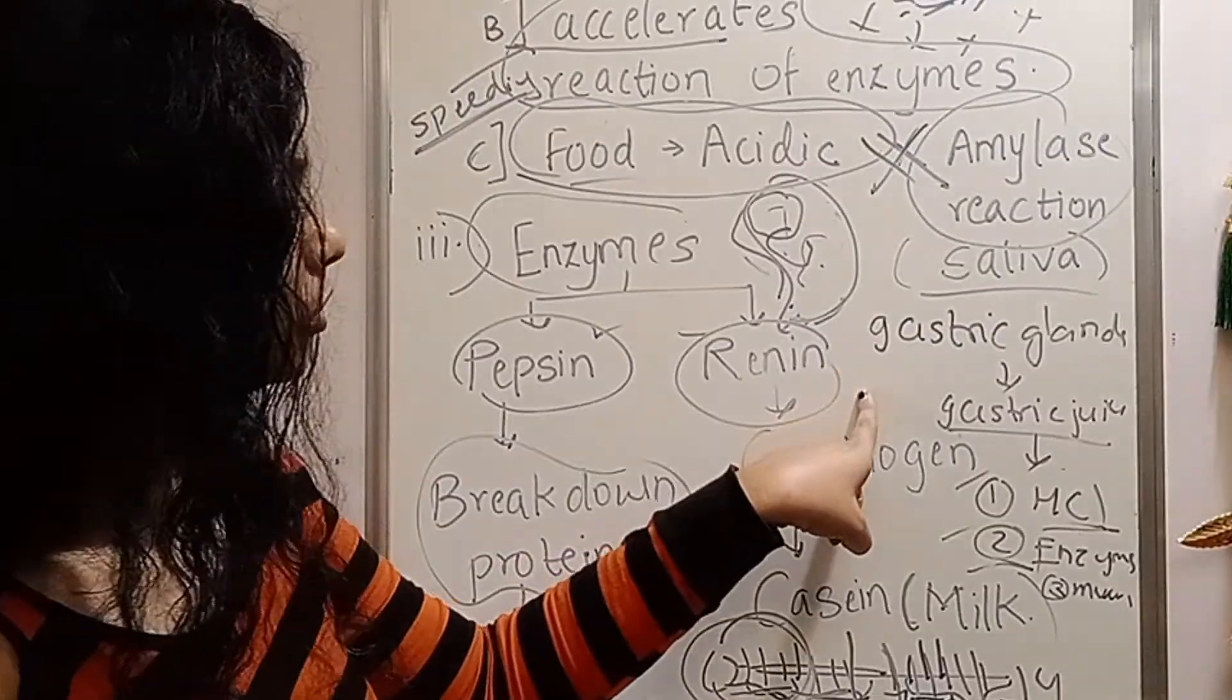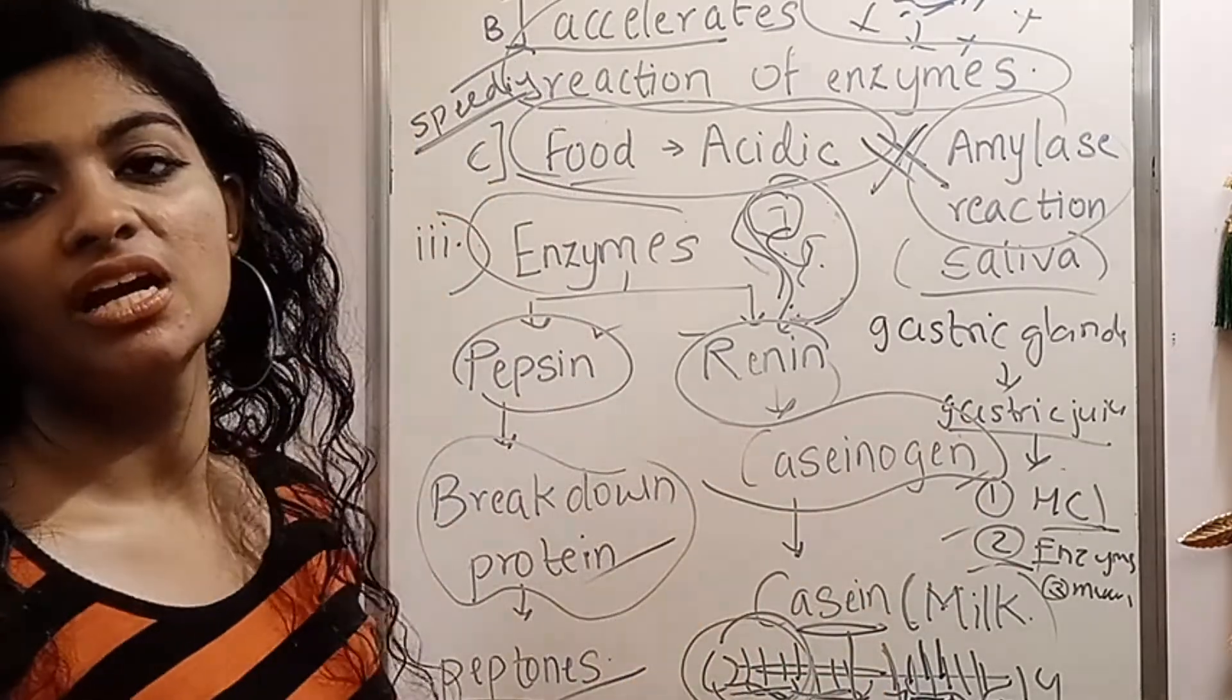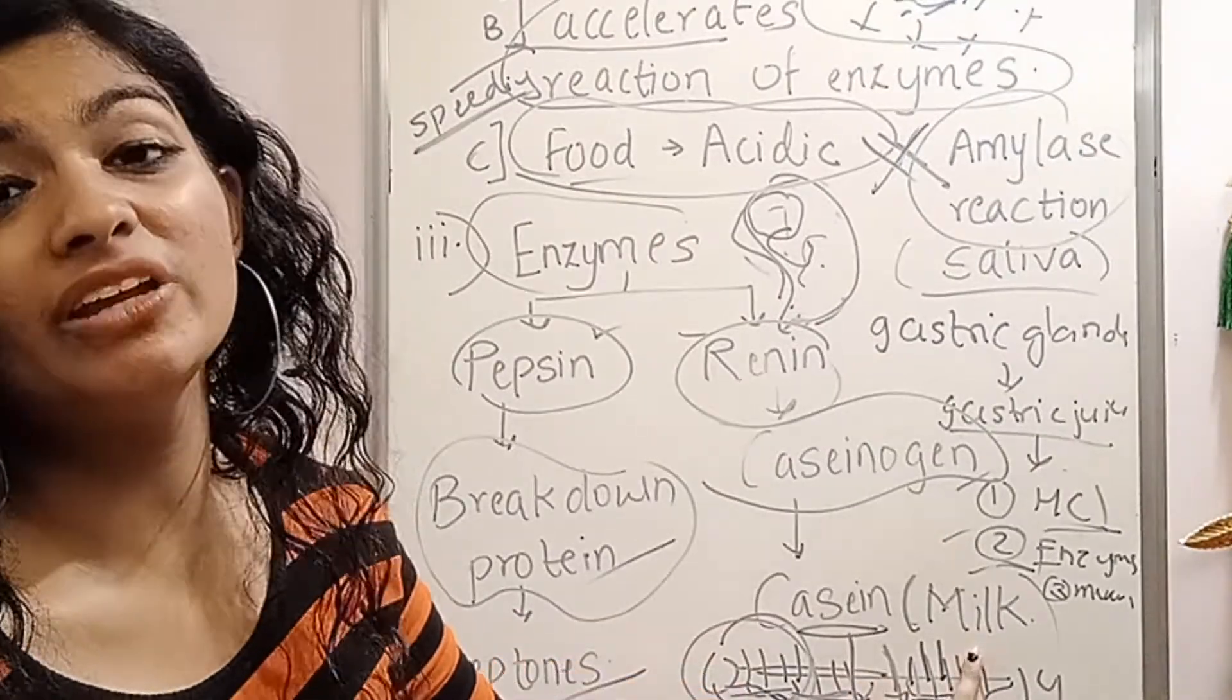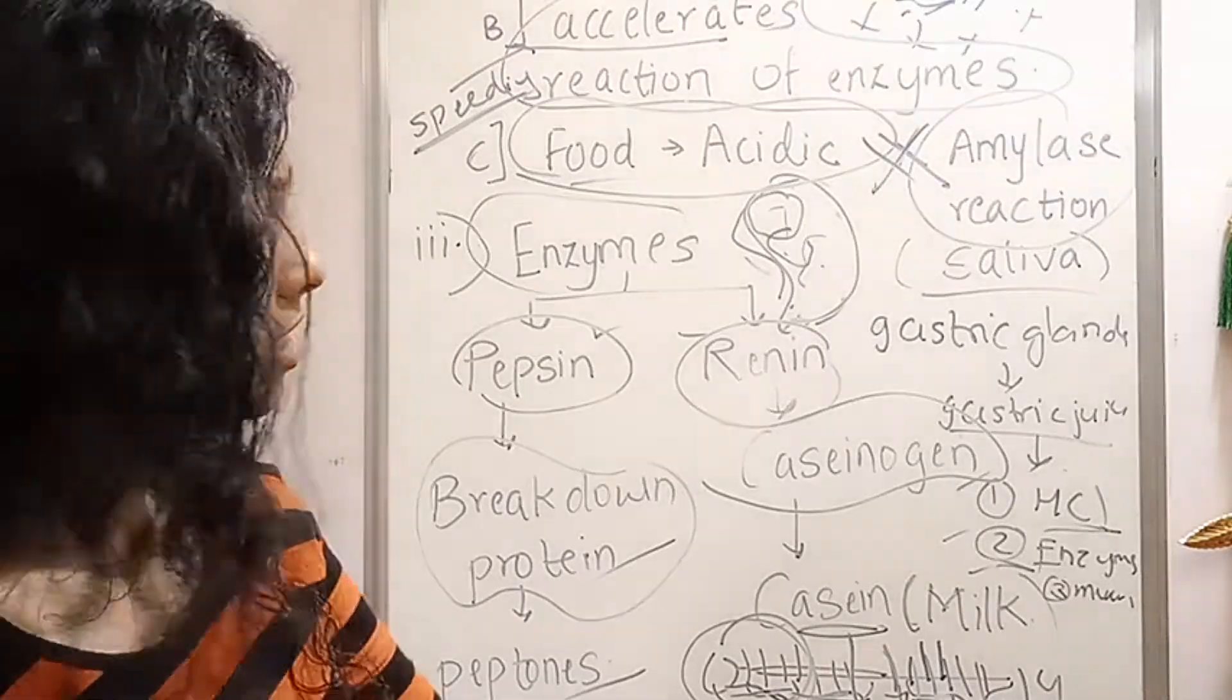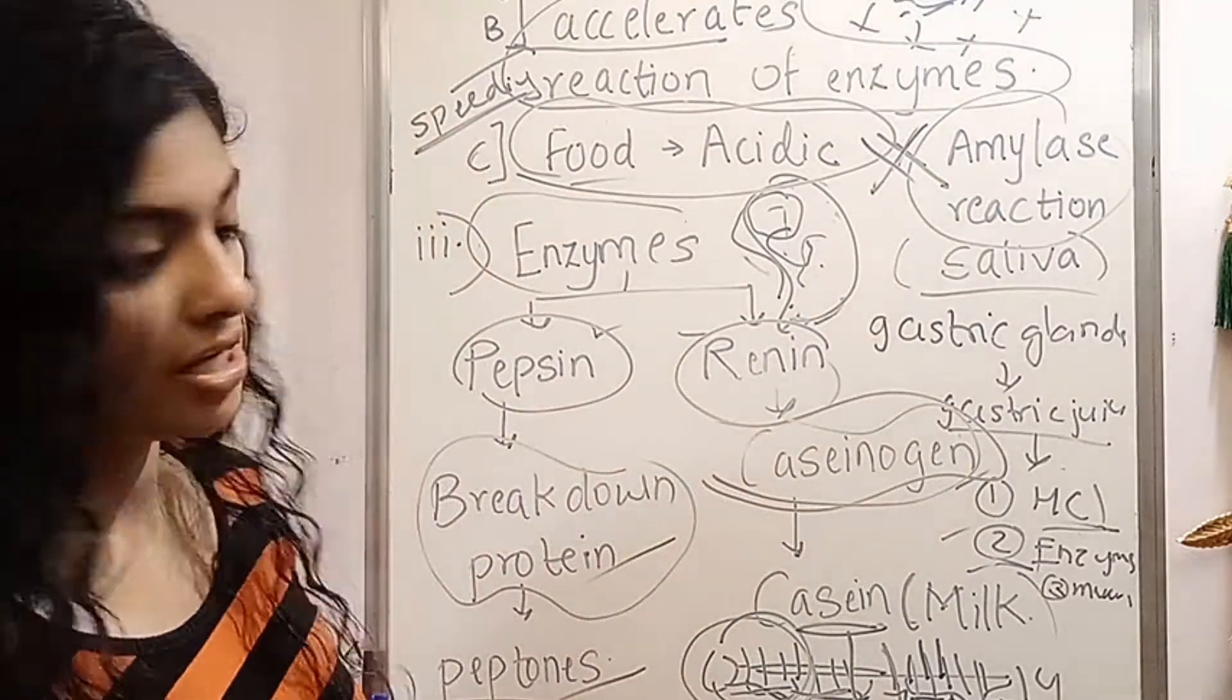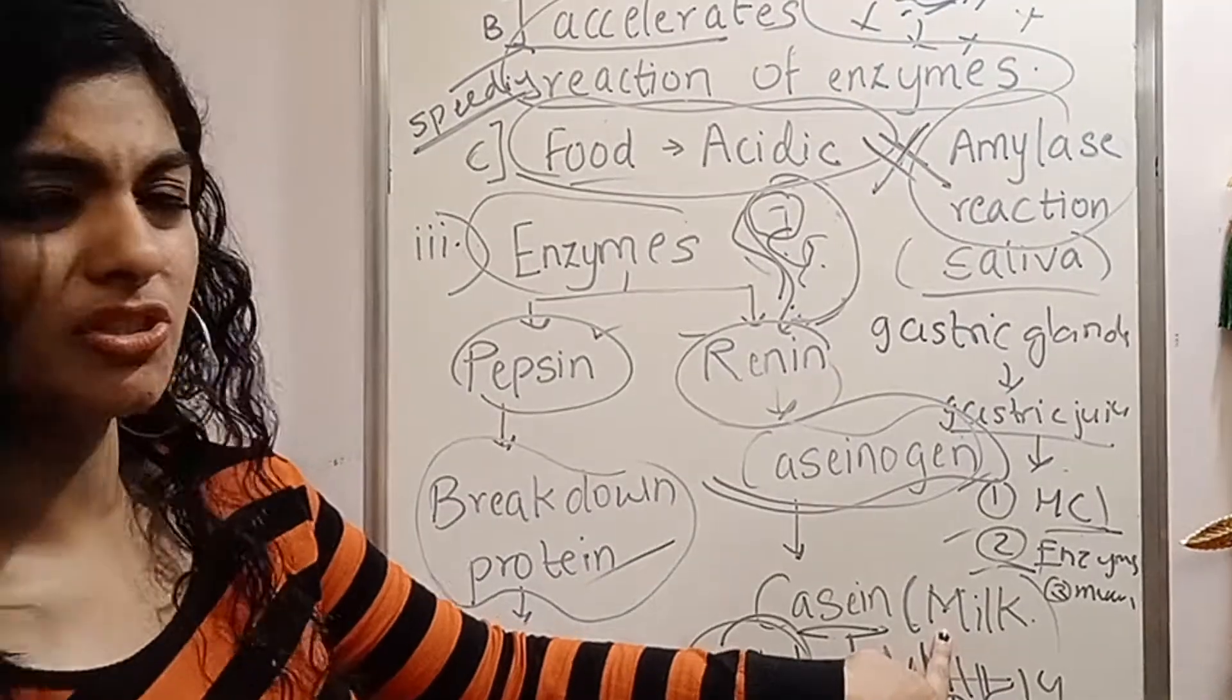What does renin do? Renin breaks caseinogen into casein. Casein is a protein present in milk. Milk has casein protein. We eat cheese and all the dairy products. We say it is rich in protein because it has casein. What does renin do? It breaks this chemical molecule caseinogen into casein in the milk which is a simpler substance.